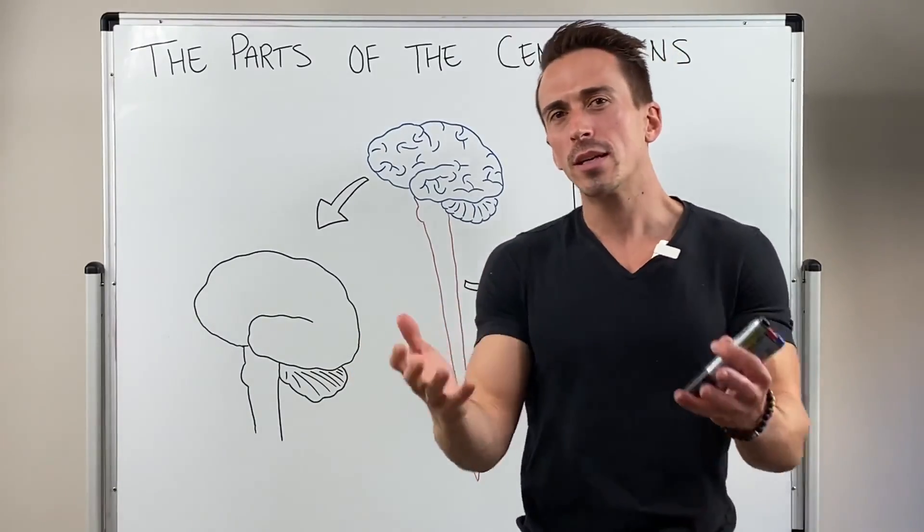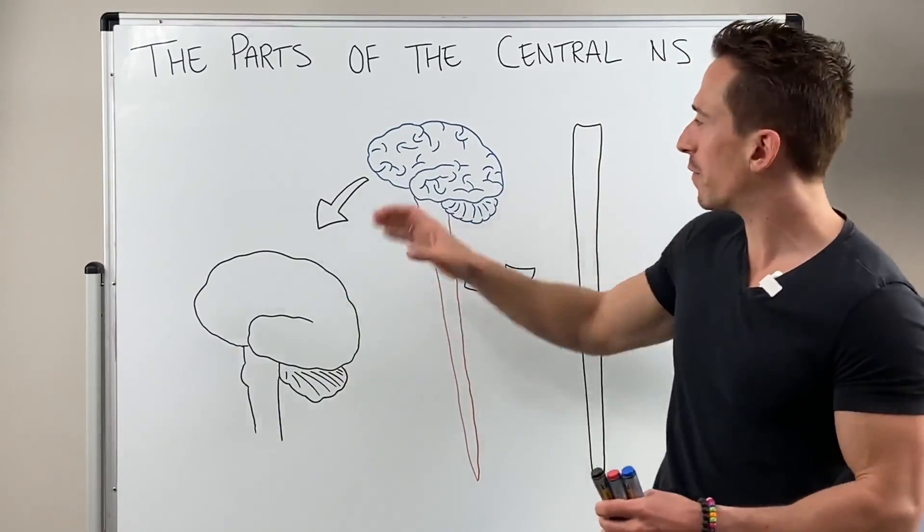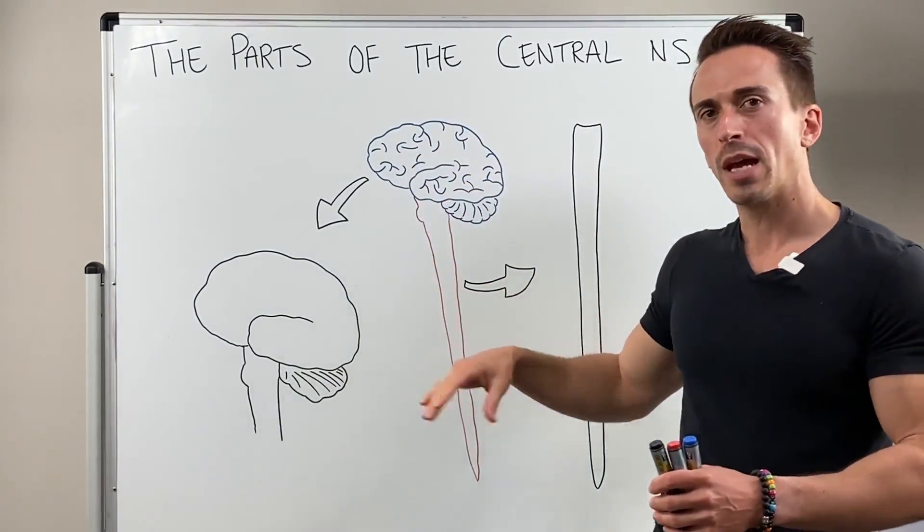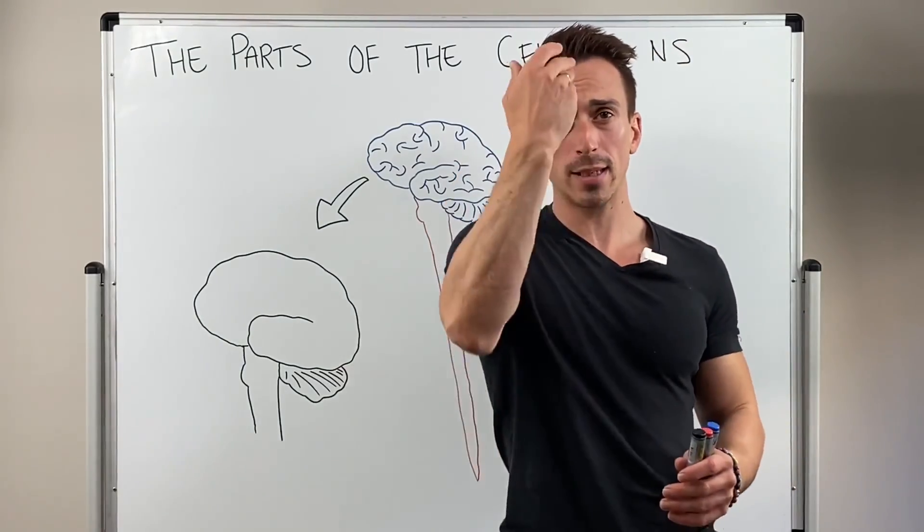To begin with, you need to understand that the central nervous system is made up of the brain and the spinal cord. And it's central anatomically because it sits in the middle of the body.